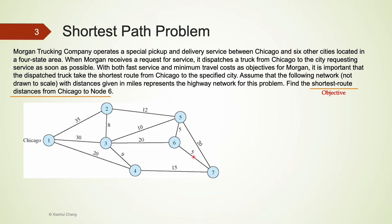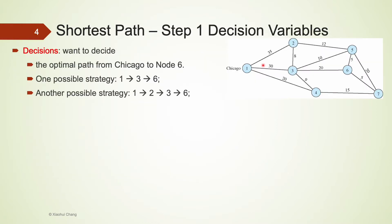Other than that, we also know that the origin of this path should be at Chicago and the destination should be at node 6. Let's try to define a set of decision variables first. The company wants to find an optimal path from Chicago to node 6. One possible path is from Chicago to 3 to 6. We are not sure whether this is the optimal path at this moment yet.